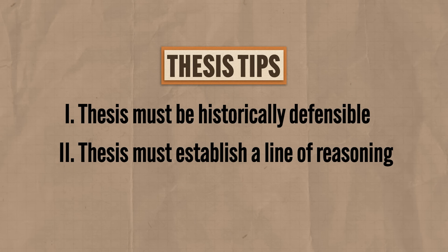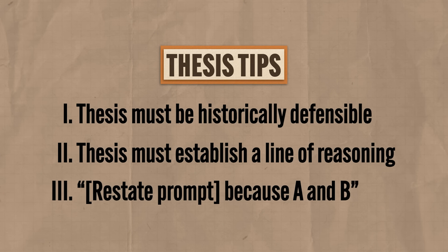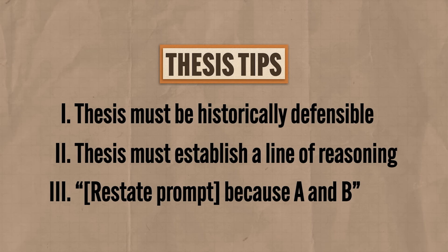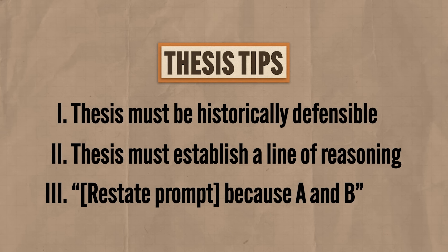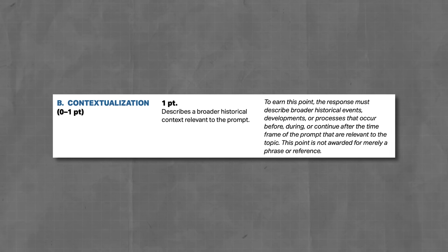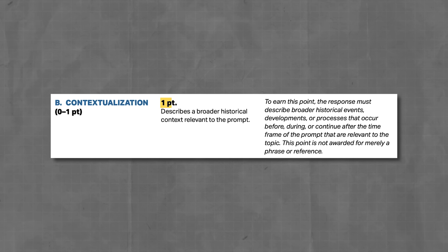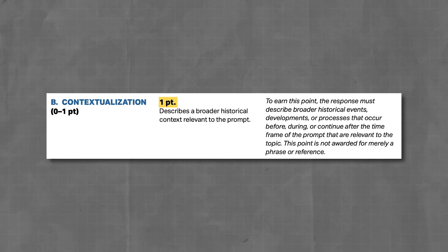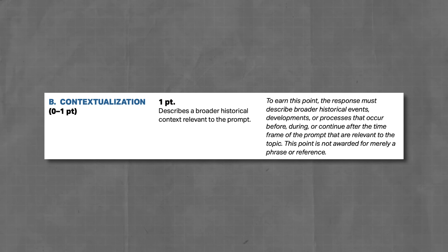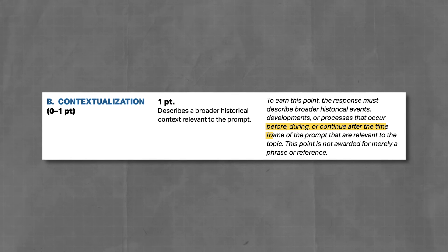If you want a formula for a thesis: restate the important parts of the prompt, then 'because A and B,' where A and B are your specific historical evidence. It's basic, but it checks all the boxes. The second point is for contextualization — you can earn up to one point here. Contextualization is there to situate your argument in the larger historical context, and the rubric says you can explain historical context before, during, or after the time period of the prompt.